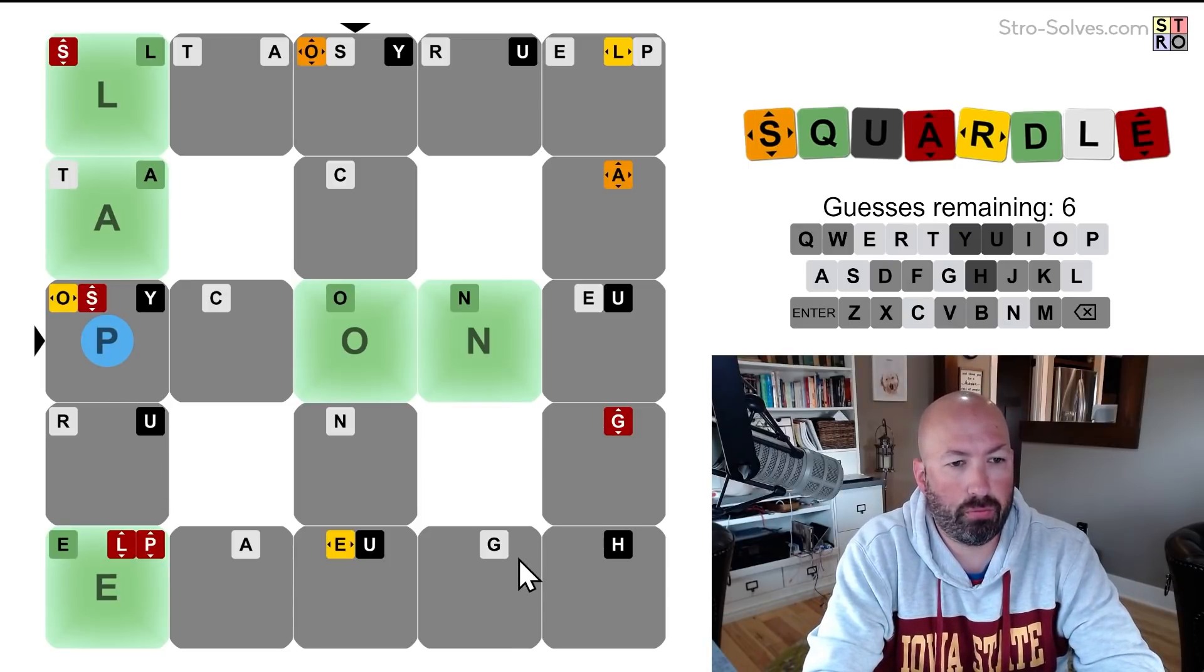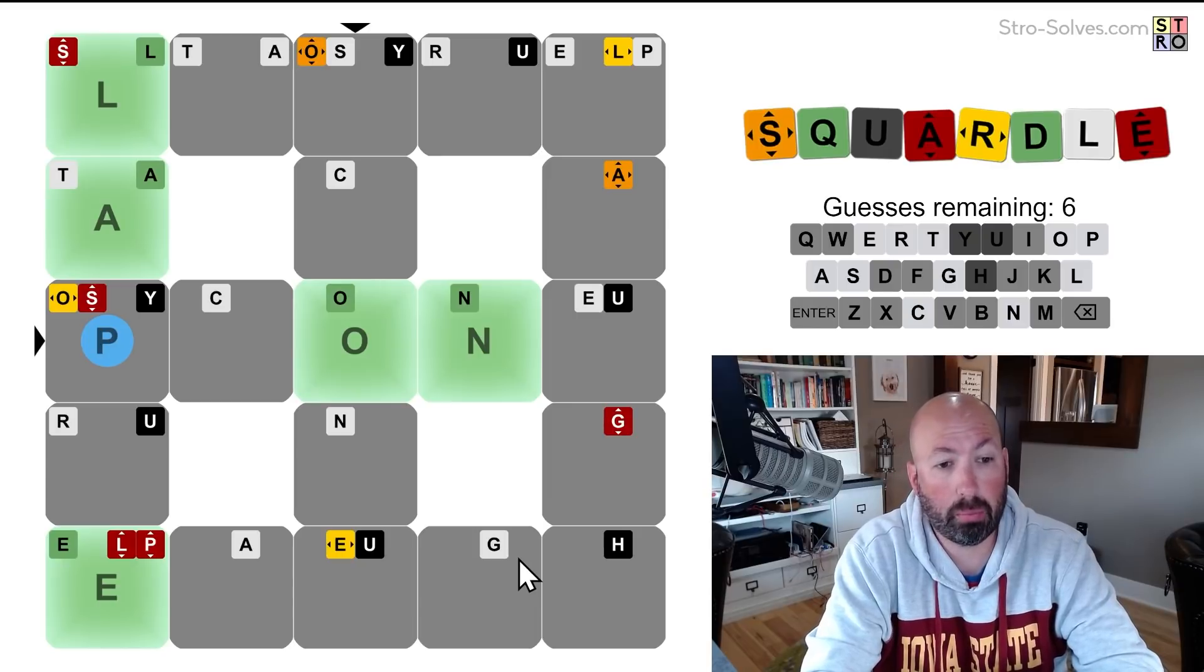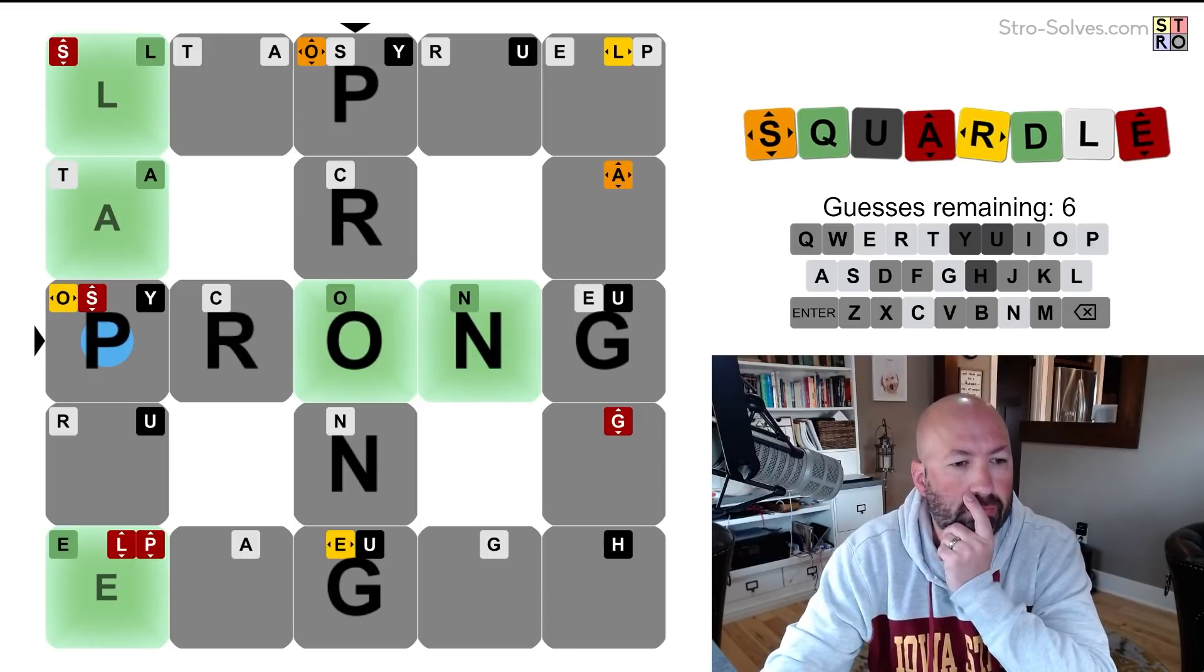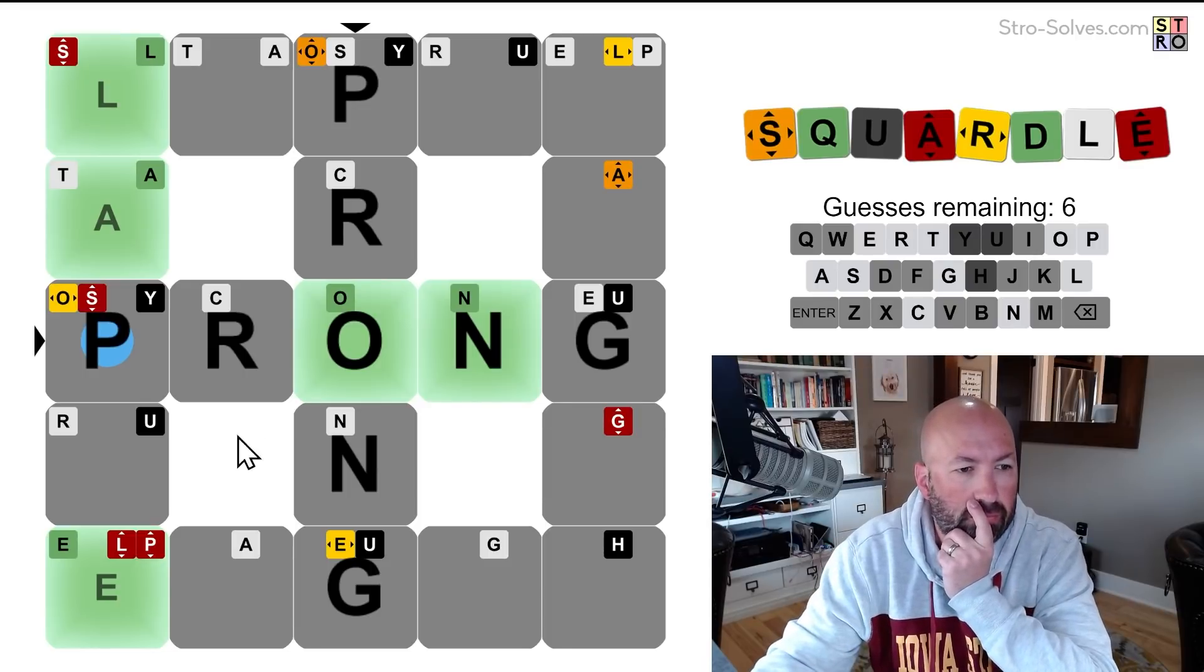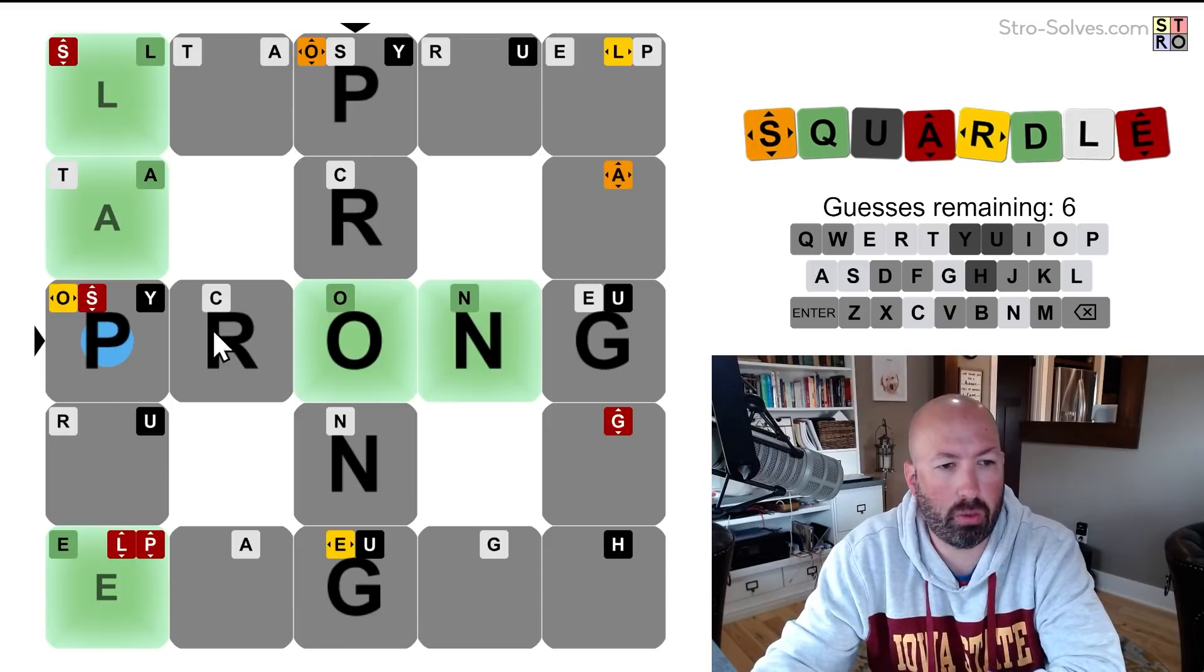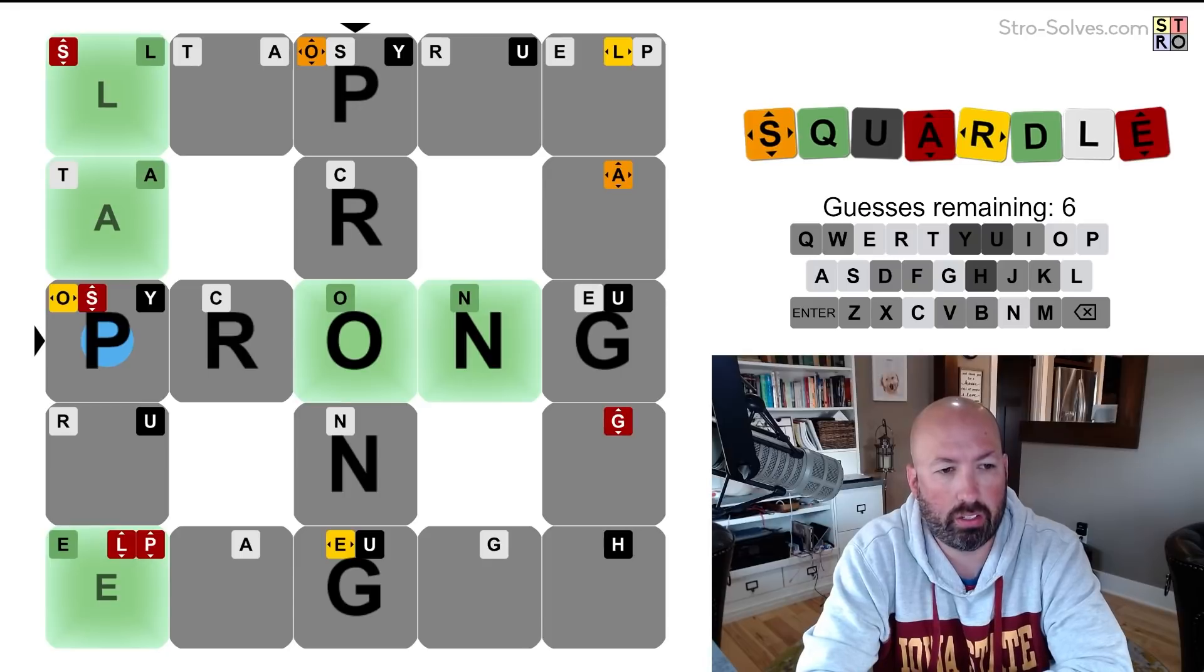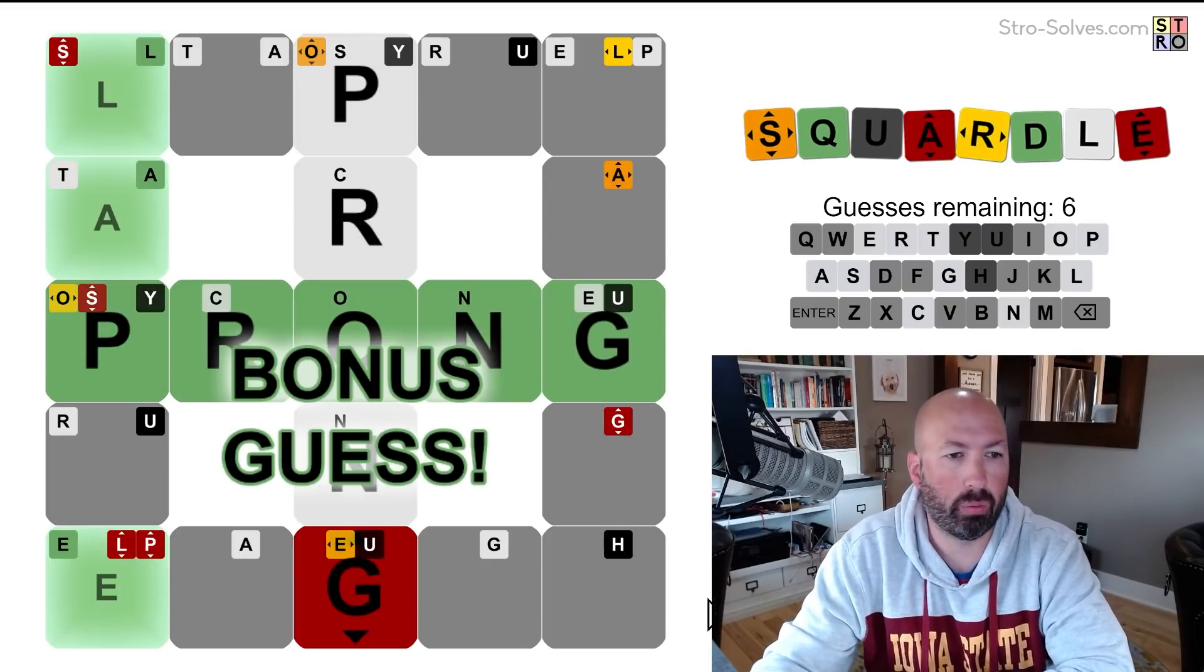Bone? No. Prong? Prong? Prong. We thought there might be a G. Let's go with prong. I think that's pretty good. We know there's an R somewhere. We know there's a G in this last column. Let's do prong. It is prong. Okay, cool. We get a bonus guess.